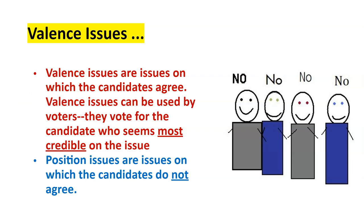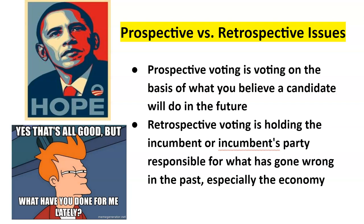Position issues are issues where candidates don't always agree, and that's where we get wedge issues — areas where we split the candidates apart and move ahead of the competition. What have you done for me lately? What are you going to do for me? These are two very popular approaches. We saw President Obama use prospective voting: what are you going to do for me in the future? Versus retrospective voting — what have you done for me lately? President Reagan appealed to voters in 1980 by asking: 'Are you better off now than you were four years ago?' That retrospective approach — what has Jimmy Carter done for you? — people said no, and voted for change.